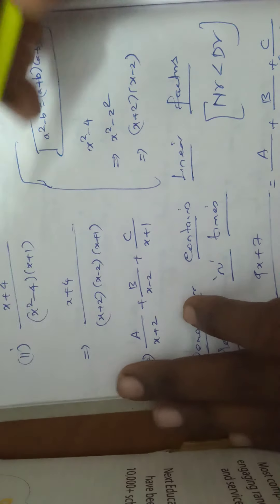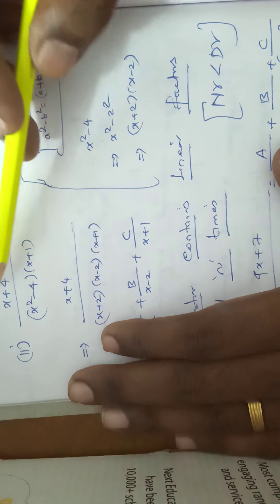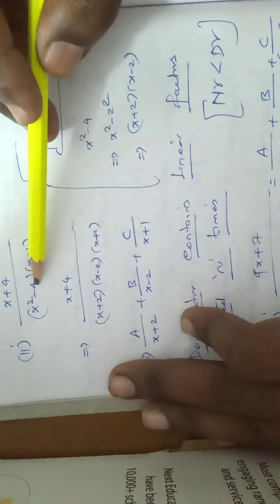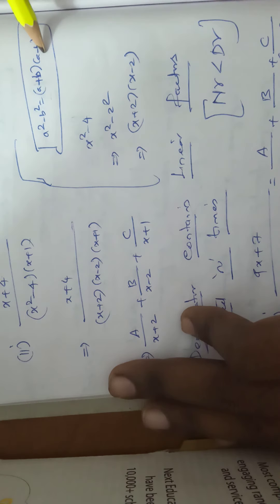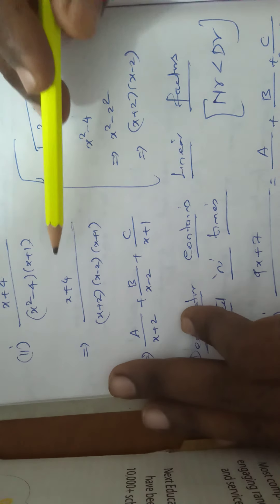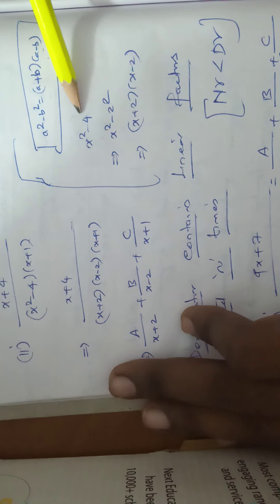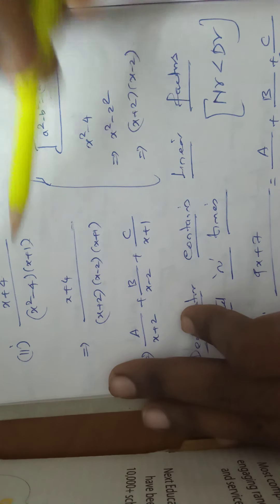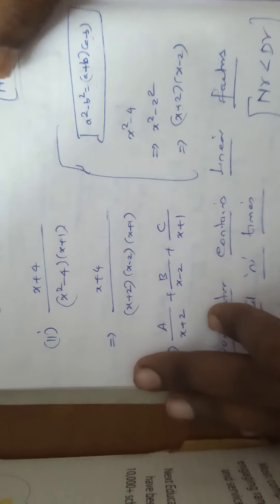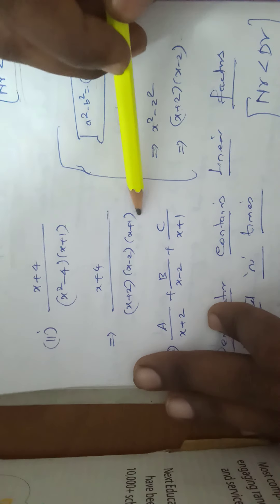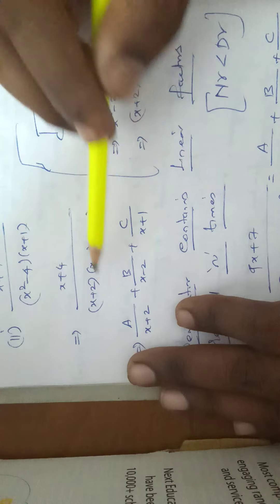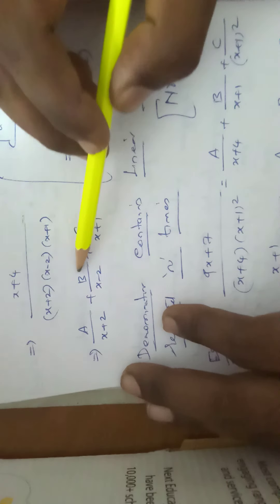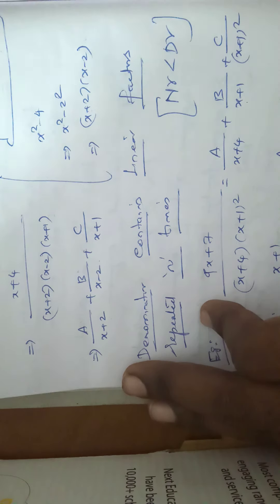Second example: resolve (x + 4)/(x² - 4)(x + 1) into partial fractions. Using the identity A² - B² = (A + B)(A - B), x² - 4 = (x + 2)(x - 2). So (x + 4)/[(x + 2)(x - 2)(x + 1)] has three non-repeated linear factors, giving A/(x + 2) + B/(x - 2) + C/(x + 1).